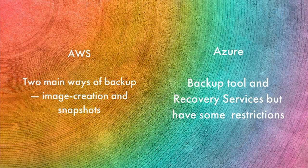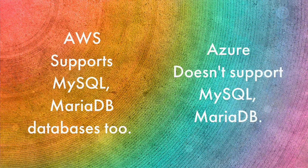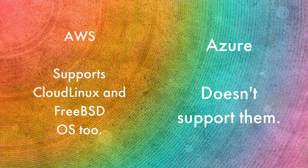For backup of your data, AWS offers image creation of the configurations as well as snapshots of EBS volumes. Azure also has backup tools and recovery services just like Amazon Web Services, but with some restrictions. AWS supports MySQL as well as MariaDB databases while Azure doesn't. AWS also supports Cloud Linux as well as FreeBSD operating systems while Azure doesn't.